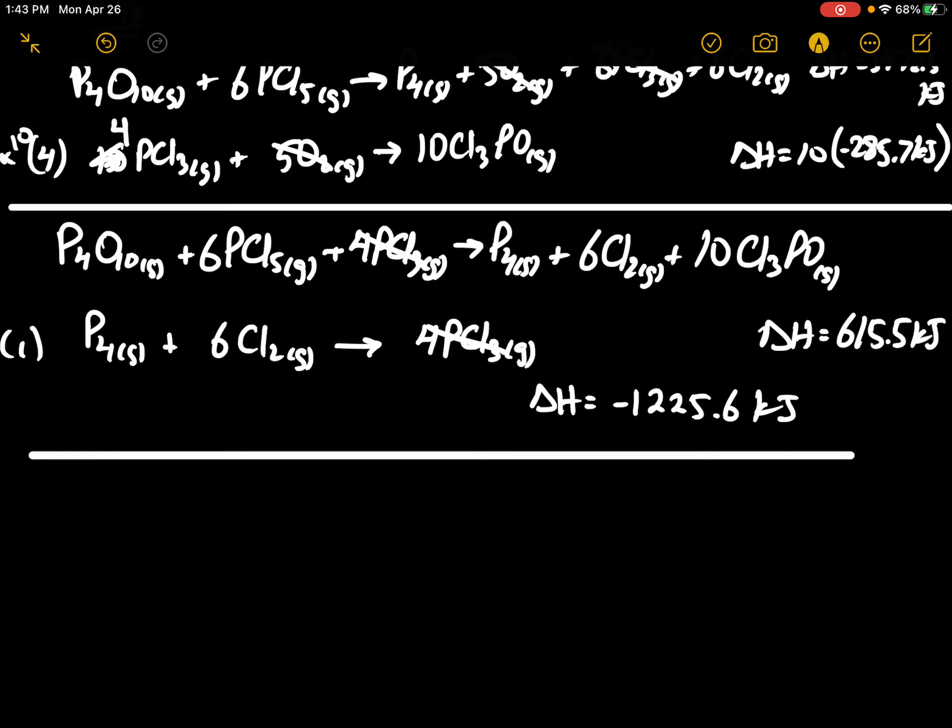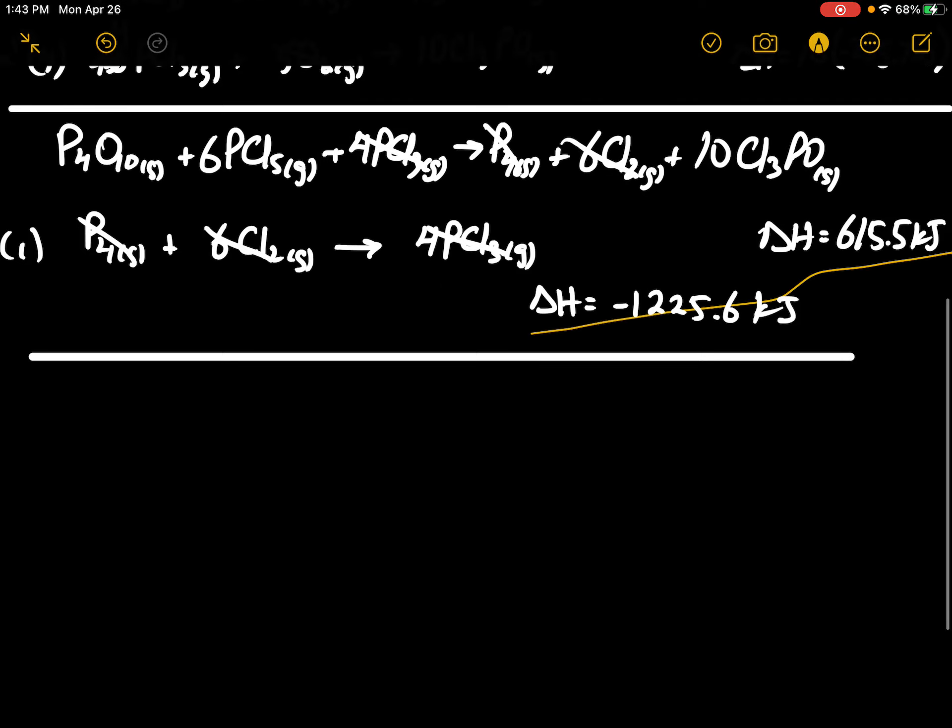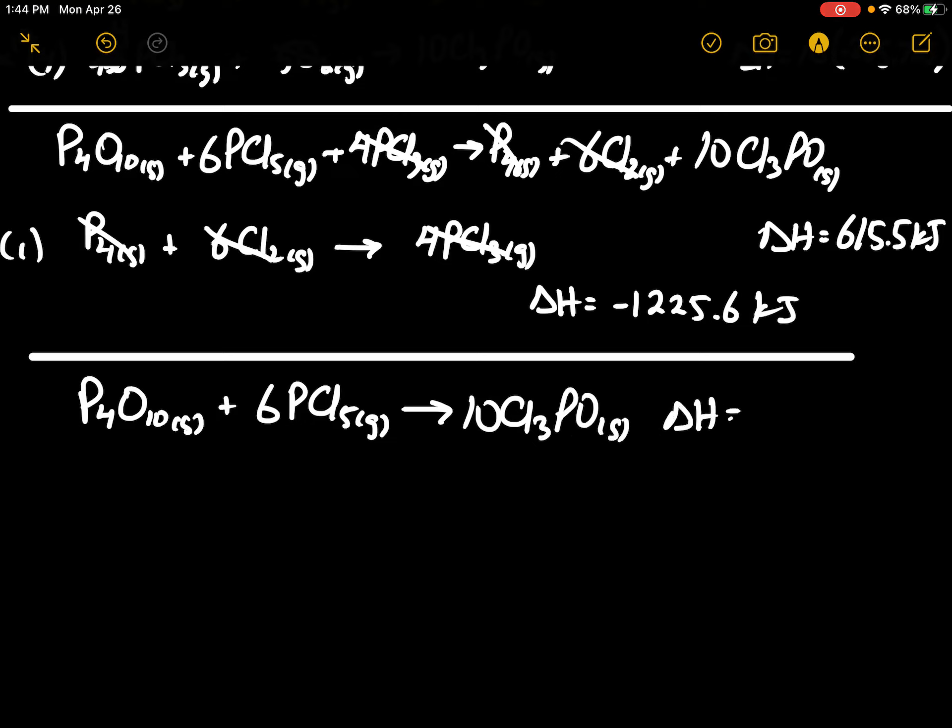So P4 would cancel, P4 would cancel, 6Cl2 would cancel, and looks like I am left with P4O10 solid, 6PCl5 gas, producing 10Cl3PO solid.